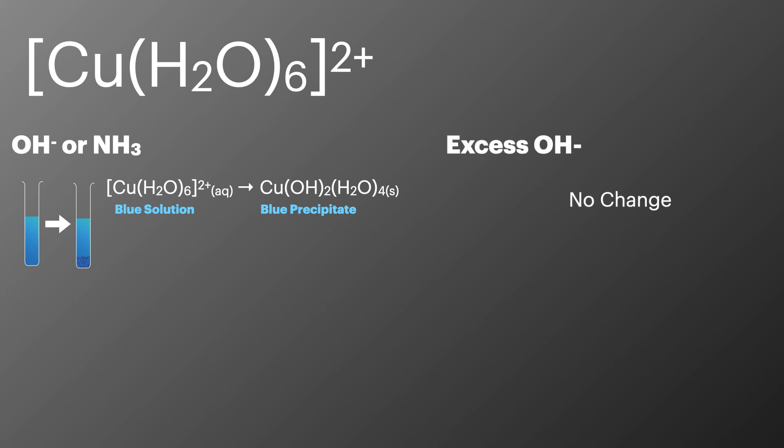If we add an excess of hydroxide ions there'll be no change. But however, if we add an excess of ammonia we'll actually see that the copper gets substituted. So we'll start to see some of those ammonia ligands on there and we'll see that blue precipitate now form a deep blue solution.